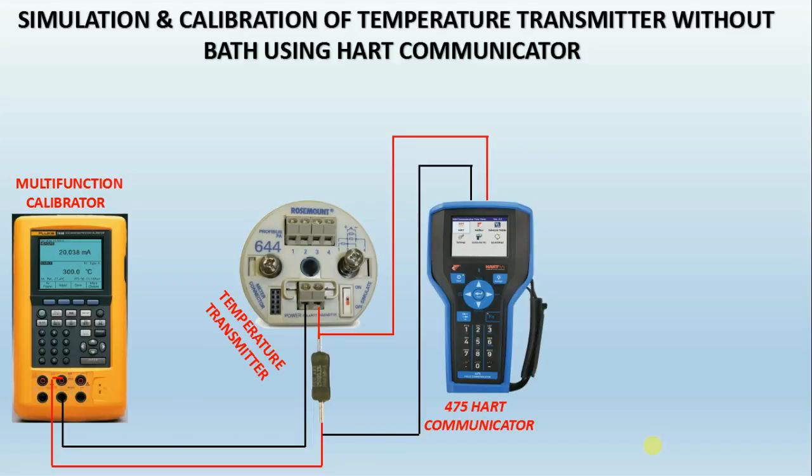Typically, temperature transmitters isolate, amplify, filter noise, linearize, and convert the input signal from the sensor, then transmit a standardized output signal to the control device. Common electrical output signals used in manufacturing plants are 4 to 20 milliamps. Now we will see how to simulate and calibrate a temperature transmitter using HART.